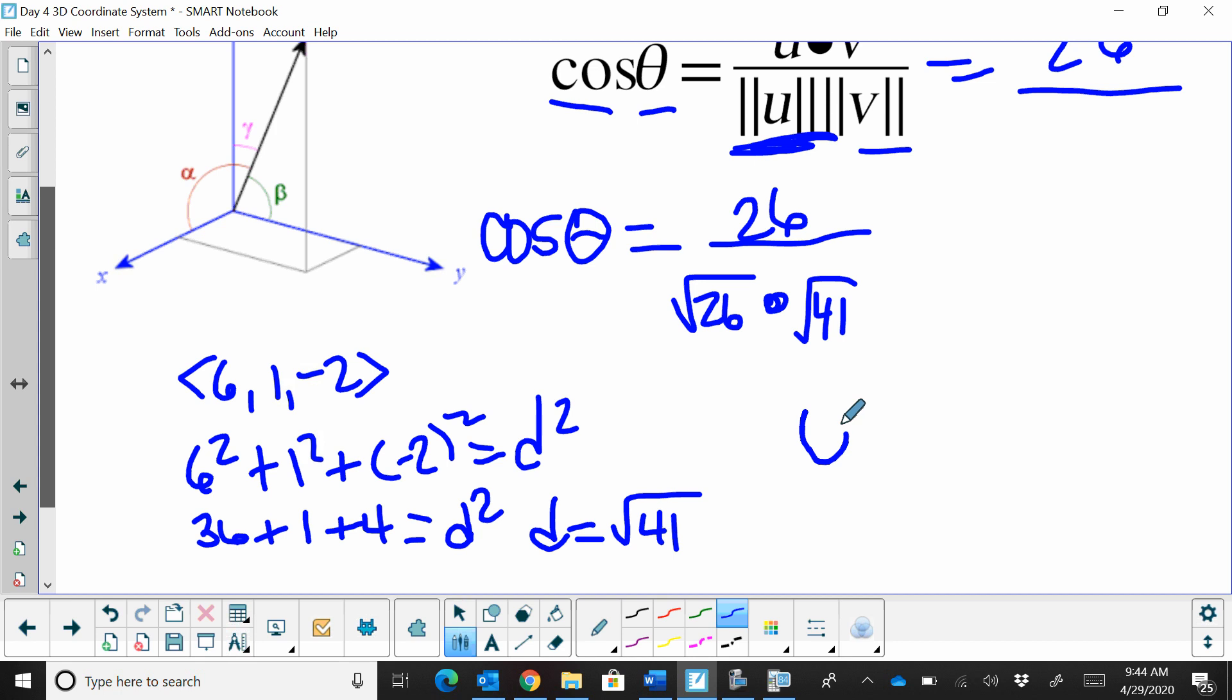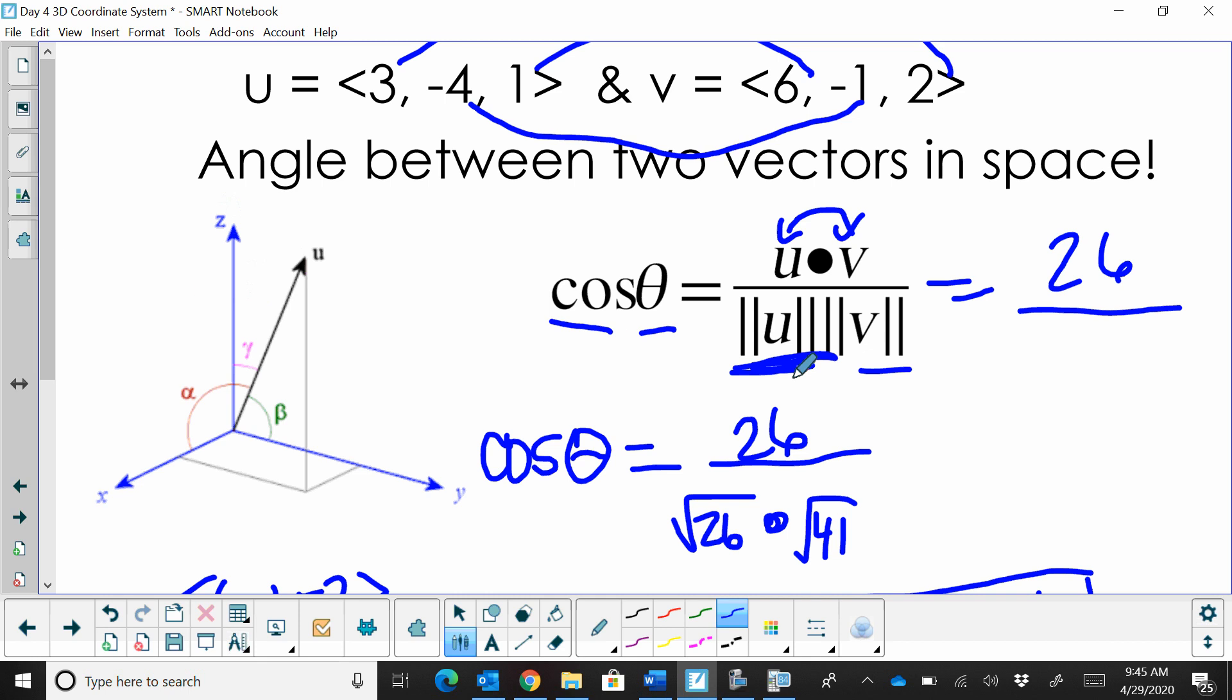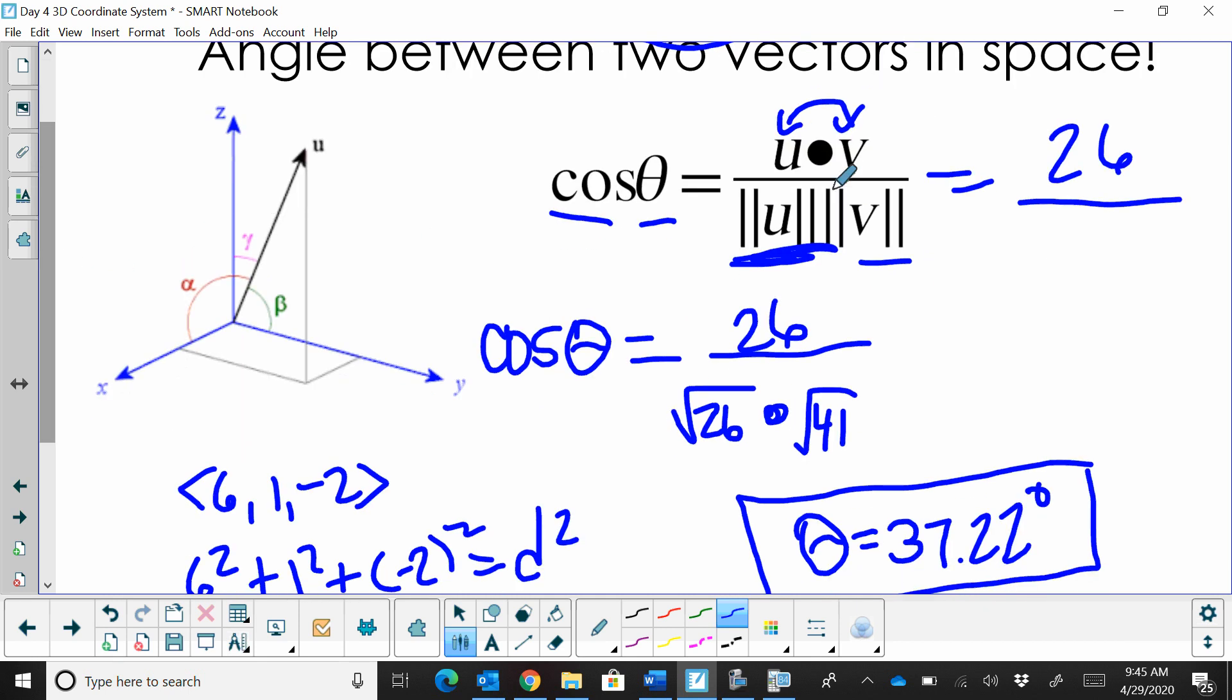So theta, the angle, is 37.22 degrees. And that is the angle between two vectors in three dimensions. So it's really no harder than finding the angle between the vector in two dimensions. You just have to think about that third coordinate to multiply to get the dot product and to multiply for the vectors. And that's it.